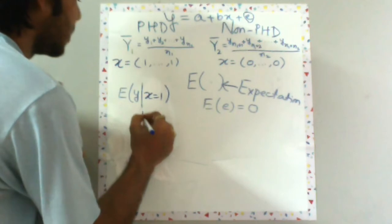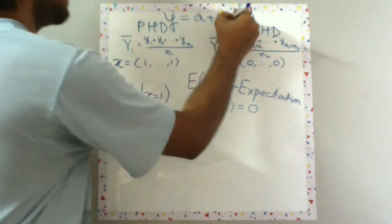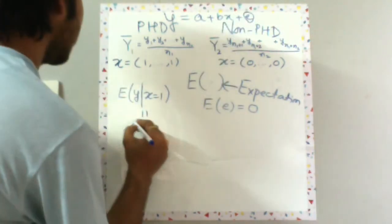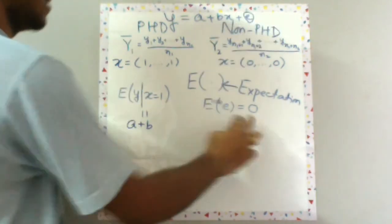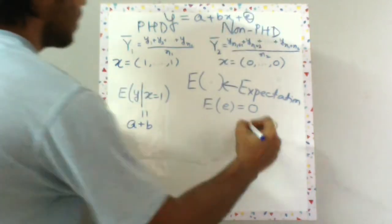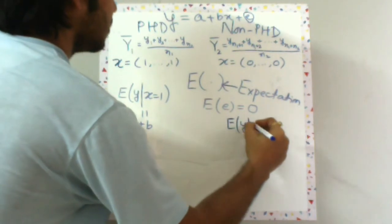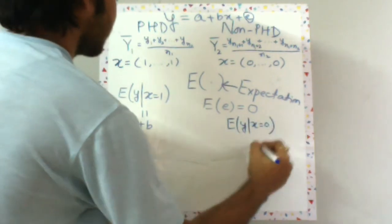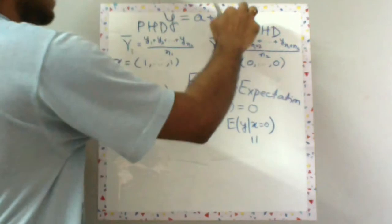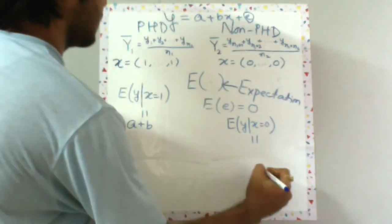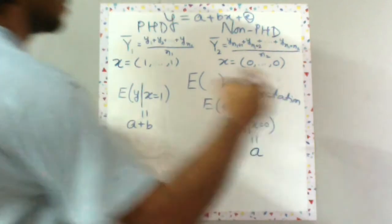This will be equal to, put one here, a plus b, and expectation of e is zero. Now what will be the expected salary of non-PhD graduates? Put x equal to zero, expectation of e is zero, so this is a.